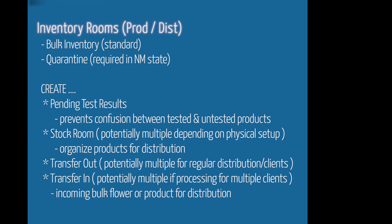Then you want a stock room — potentially multiple — depending on how large your location is and how many separate rooms or shelves you have storing product. This is to help you inventory and keep track of product. Then you want transfer out rooms — potentially multiple. If you're a distribution hub for multiple stores or locations, you want as many transfer out rooms as locations you're regularly servicing, so you don't get product digitally or physically confused. If you are only transferring out product one at a time, you can use just one. You also want a transfer in room for any product coming into your distribution or production facility, so you can keep track of it separately until it's ready to distribute or process.